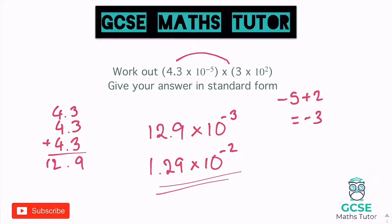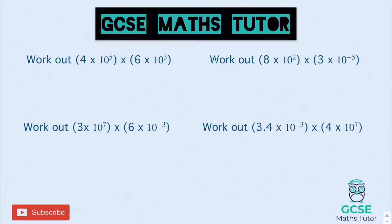We did 4.3 times 3 with working to the side, then balanced it: number at the start one place value smaller, power one jump bigger. Watch out with negative powers — making it one bigger goes toward zero, so negative 3 becomes negative 2, not negative 4. Here are four questions to have a go at. Pause the video and we'll go over the answers in a second.